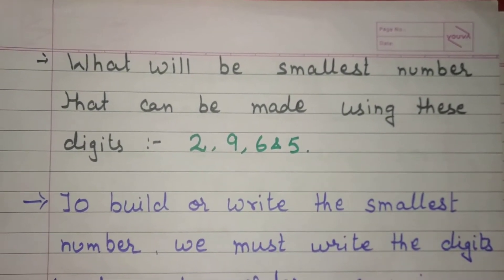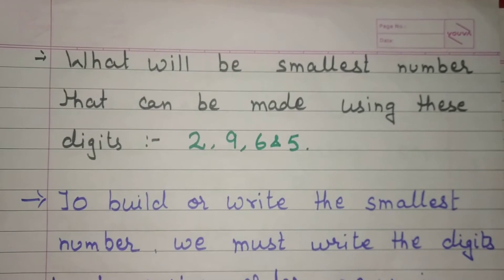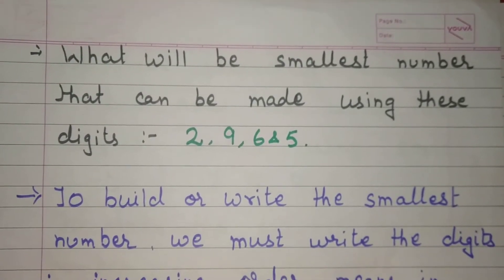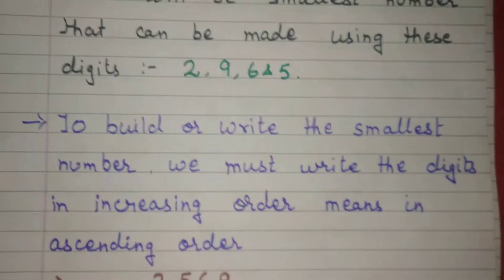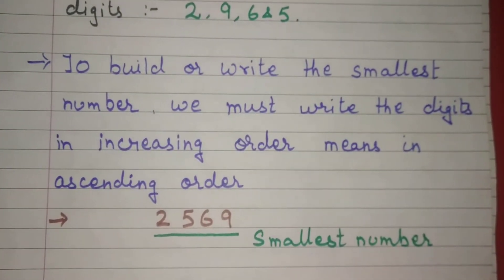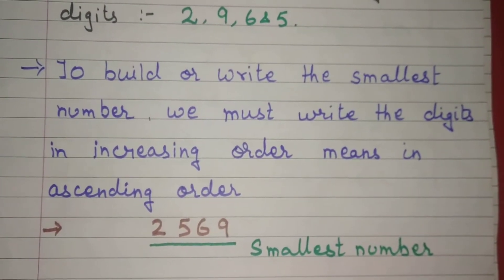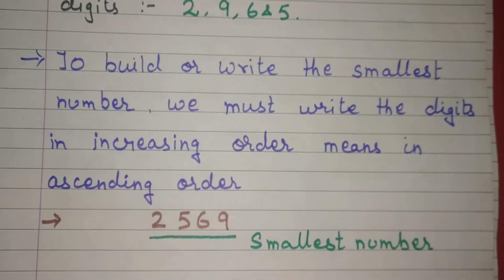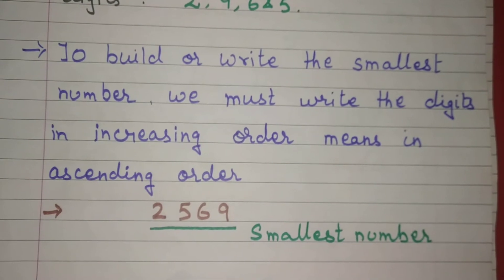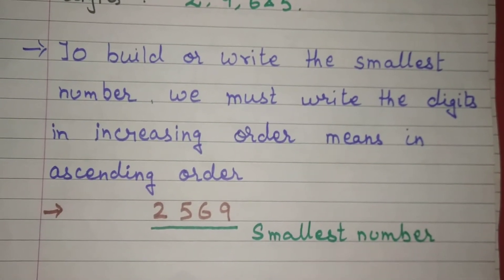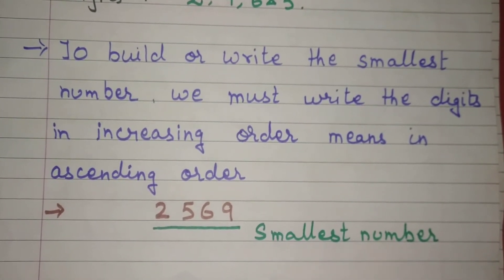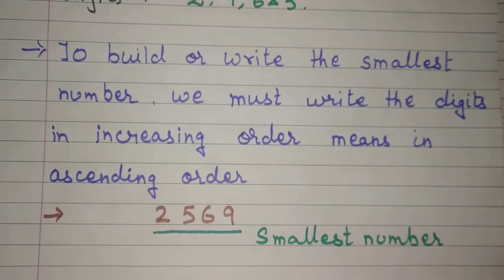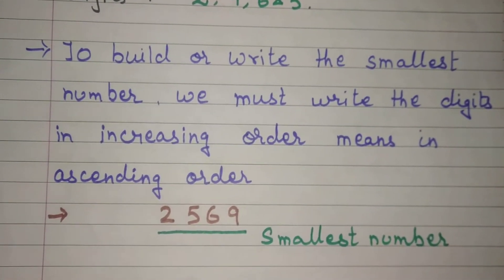Now what will be the smallest number that can be made using these digits — that is 2, 9, 6 and 5? To build or to write the smallest number, we must write the digits in increasing order, meaning in ascending order. If you write like that, we will get the smallest number. So the smallest number will be 2569.